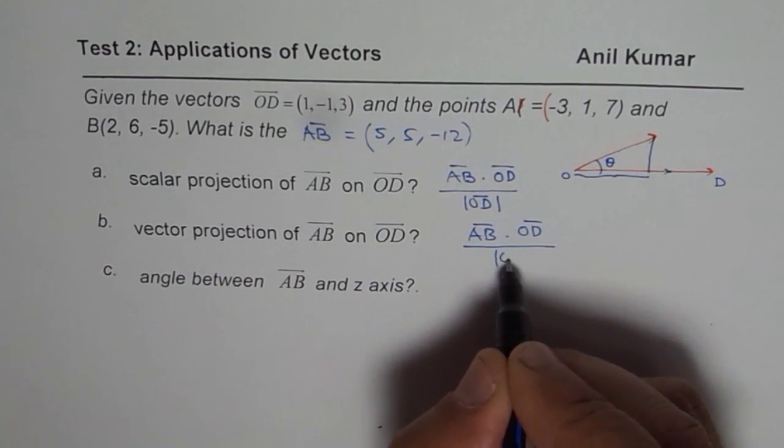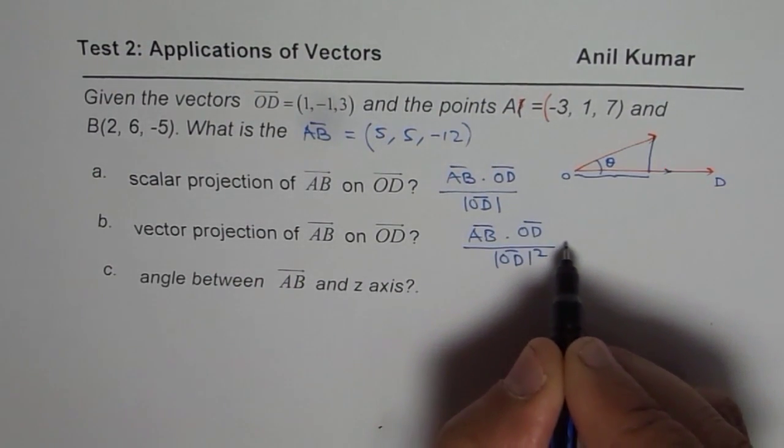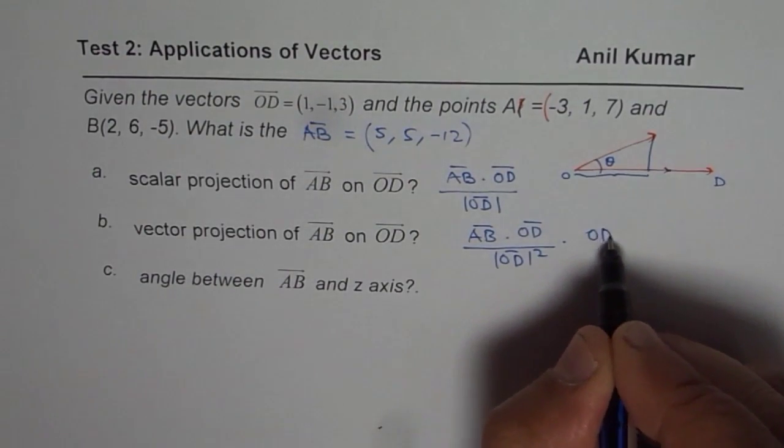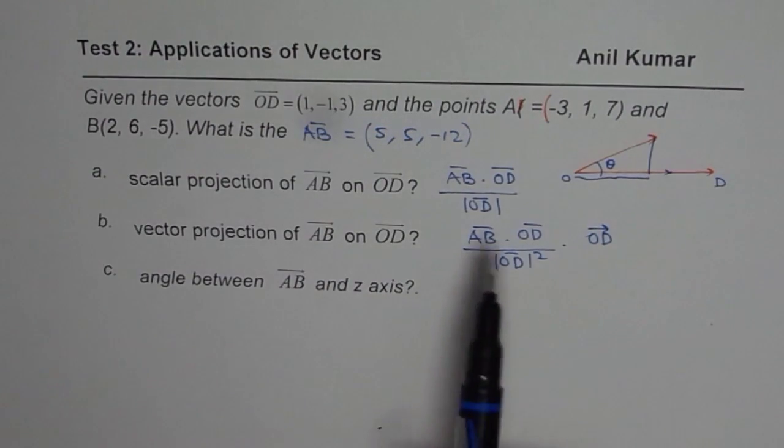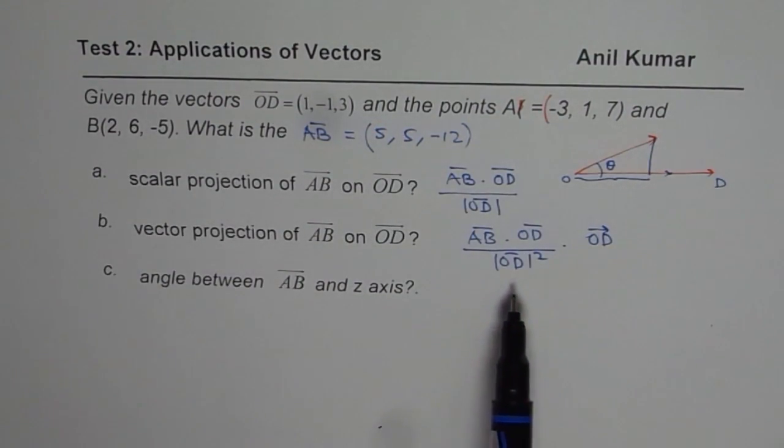So it becomes magnitude of OD squared times the vector OD itself. So that becomes the vector projection. You can always replace these and find your answer.